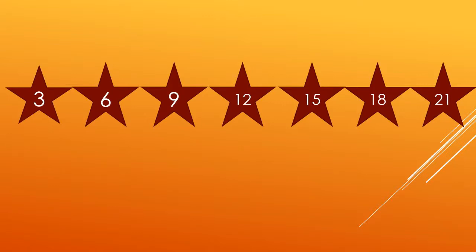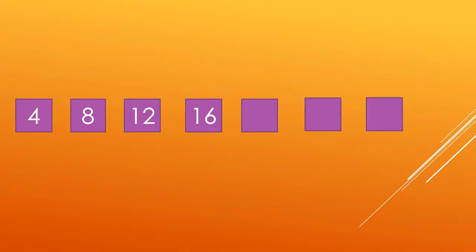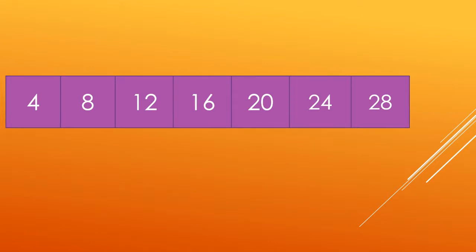Now let's see the next number pattern. The numbers are 4, 8, 12, and 16. In each step, there is a difference of 4. So which number will come after 16? Correct — number 20. What is the next number? Correct, number 24. And after 24? Yes, number 28. So this pattern is complete.